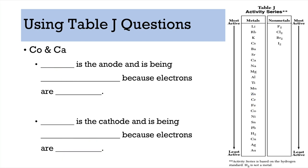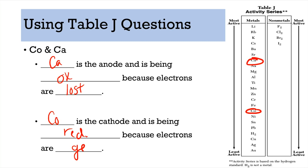Next pair: cobalt and calcium. Make sure you're looking very carefully at this list because it's easy to mix these up. Calcium is higher up — it is the anode, it is being oxidized, and electrons are being lost. Cobalt is the cathode — it is being reduced and electrons are gained.